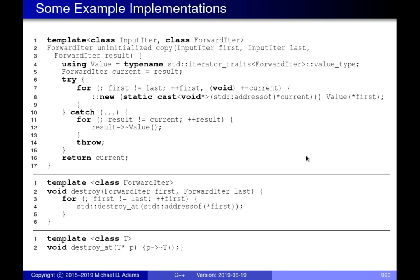Some examples of possible implementations: some of these functions are trivial, but some are more involved because of exceptions. There's `destroy_at`, which takes a pointer and directly invokes the destructor — a trivial example. There's `destroy`, which loops from `first` to `last` destroying everything in that range. Note that `addressof` must be used here because this is template code — if you use the actual address-of operator, for some types it might not do what you expect.